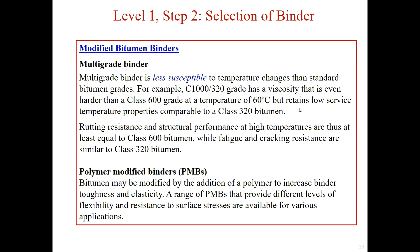Now let's look at the modified bitumen binder. Compared to standard bitumen grades, the multi-grade bitumen is less susceptible to temperature change. So it can provide improved deformation resistance at high surface temperature while retaining the desired level of flexibility at low temperature. The polymer modified binder adds polymer to increase binder toughness and elasticity. Toughness is the ability of a material to absorb energy and plastically deform without fracture. Polymer modified binders are normally used to enhance the properties of bituminous binders to improve performance on heavily trafficked pavement surfaces or provide greater flexibility.